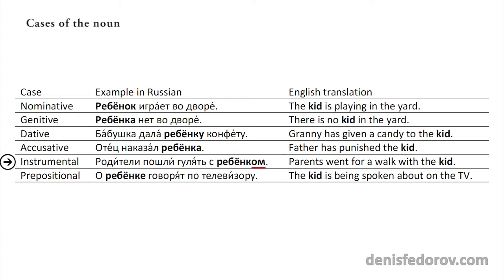Instrumental case: родители пошли гулять с ребёнком — parents went for a walk with the kid. Prepositional case: ребёнке говорят по телевизору — the kid is being spoken about on the TV.